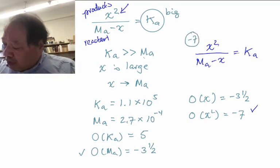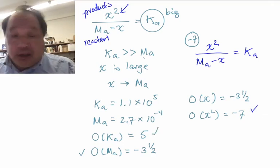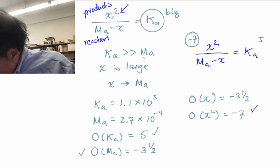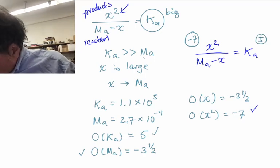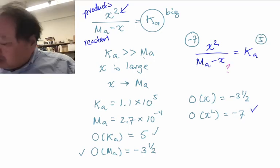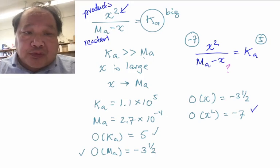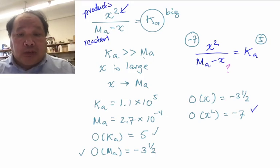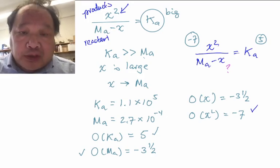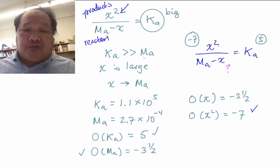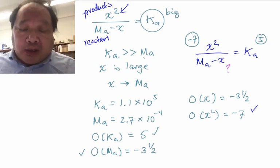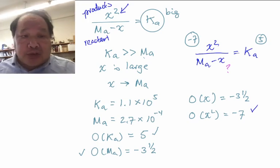We have the order of magnitude of Ka is a five. So then the question is, what is the order of magnitude of the denominator so that everything works out? Please pause the video and see if you can figure out what the order of magnitude of the denominator is so that equation works out.